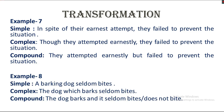Example number eight. Simple — a barking dog seldom bites. Here, 'a barking dog' is the subject and it's a noun phrase. A noun phrase has three parts: determiner, modifier, headword. Here, the word 'barking' is a modifier, and we will make a clause using the modifier. Complex — the dog which barks seldom bites. Compound — the dog barks and it seldom bites. Or it may be: the dog barks and it does not bite.